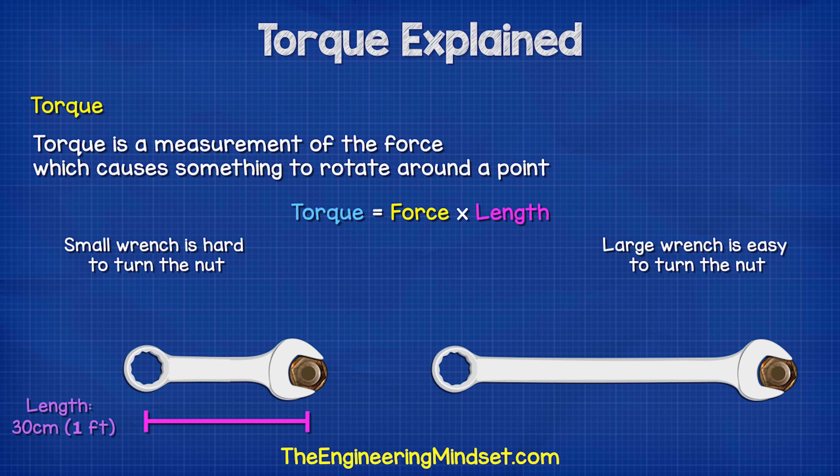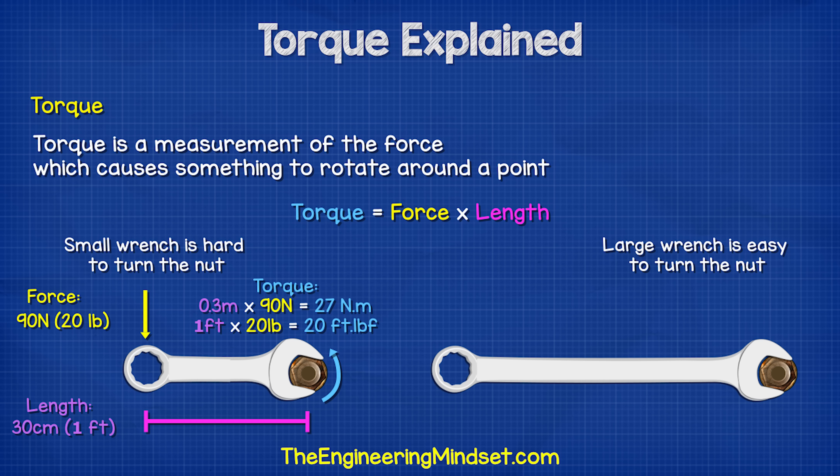If we use a 30cm wrench and apply 90N of force, we have 0.3m multiplied by 90N, which gives us 27Nm of torque.